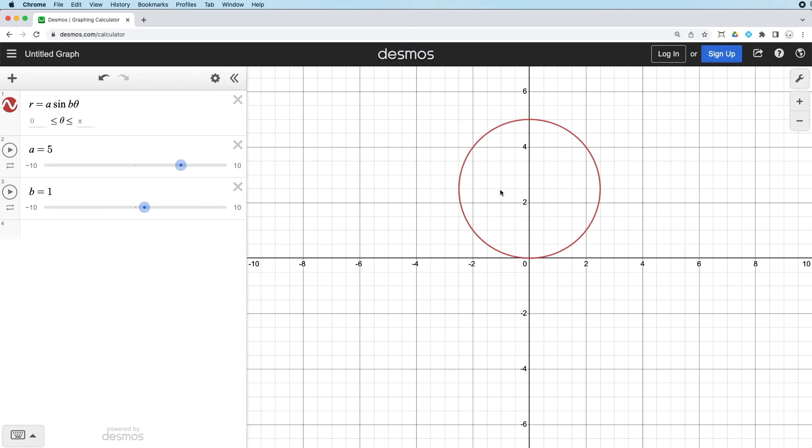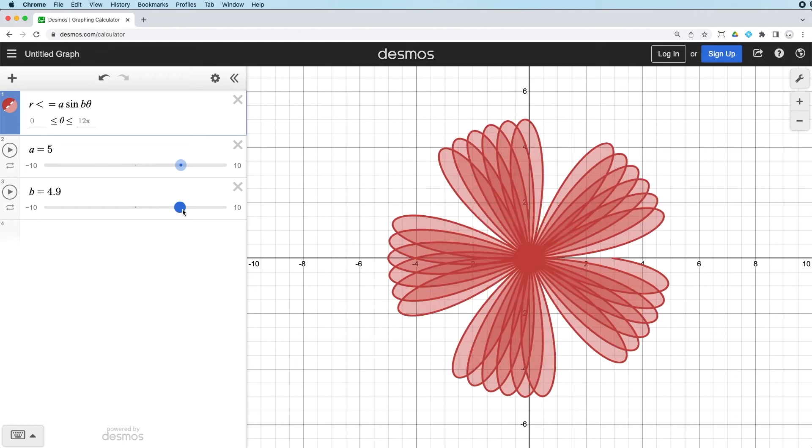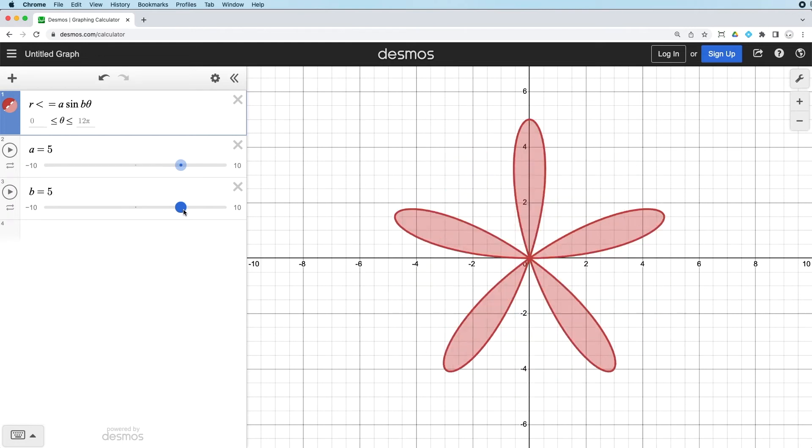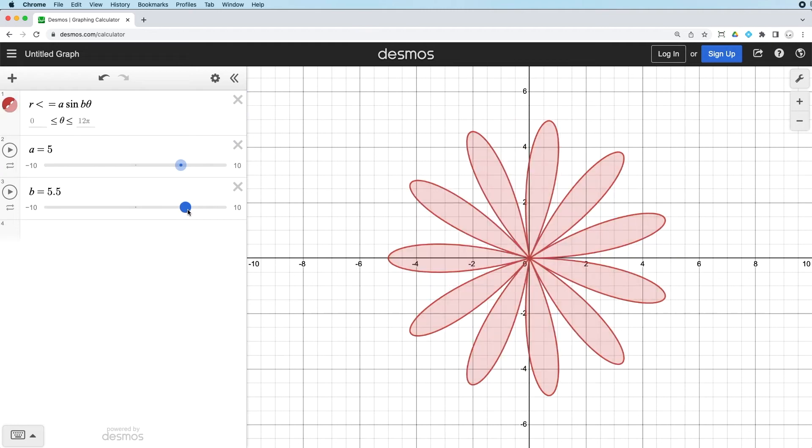Now I also want to have my petals colored in so where I've got this R equals I'll change that to less than or equals. Now it gets colored in and here where I've got the B let's increase that to say three. You see I've got three petals, maybe even five. I've got five petals and if I go to 5.5 that's actually a nice little pattern.